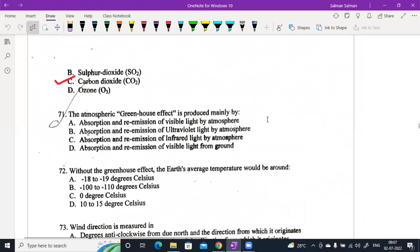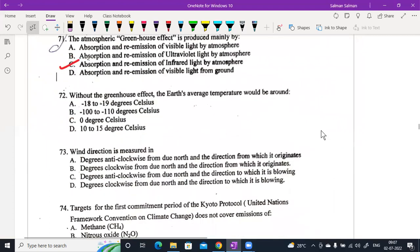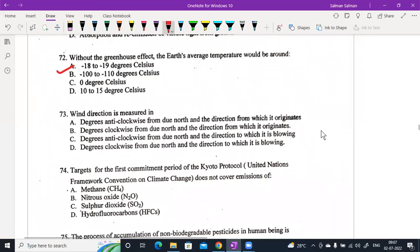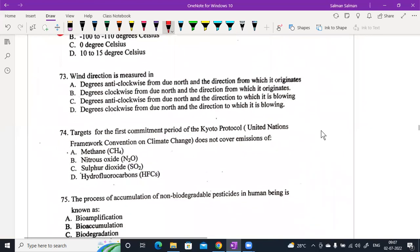The atmospheric greenhouse effect is produced mainly by absorption and re-emission of infrared light by atmosphere. Without the greenhouse effect, the Earth's average temperature would be around minus 18 to minus 19. This is the advantage. But when the effect is increased, the advantage is reduced.